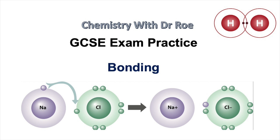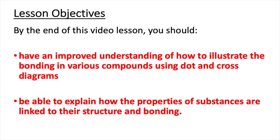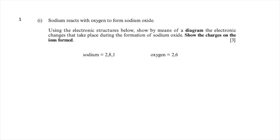Welcome to our latest video, which is part of a new series for GCSE revision. This series looks at tackling exam questions for key topics, and this first video is on the topic of bonding. By the end of this video lesson, you should have an improved understanding of how to illustrate bonding in various compounds using dot and cross diagrams, and you should also be able to explain how the properties of substances are linked to their structure and bonding.